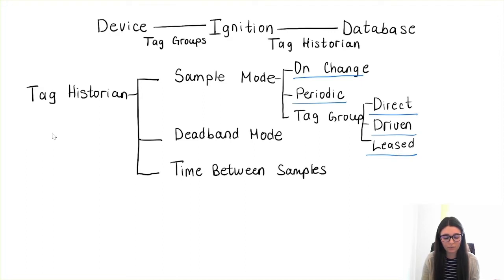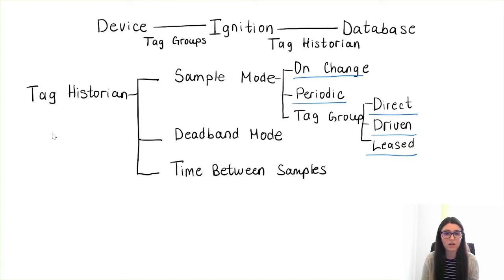The periodic mode is a tricky one, because if we are dealing with a lot of tags, we may end up with large amounts of data. The periodic mode works on a specific execution rate — for example, if we set it to one second, then every second a value will be inserted into the database for each tag.